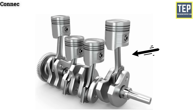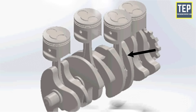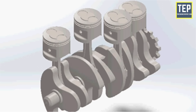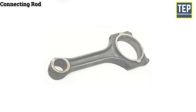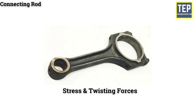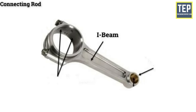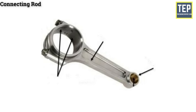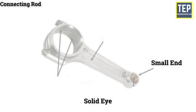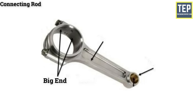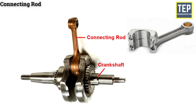The connecting rod is fitted between the piston and crankshaft. Its main function is to convert the reciprocating motion of the piston into the rotary motion of the crankshaft. It must be light and strong enough to withstand stress and twisting forces, and usually has an I-beam cross section made of alloy steel or duralumin by drop forging. The small end connects to the piston via the piston pin, while the big end is always split to connect to the crank pin of the crankshaft.